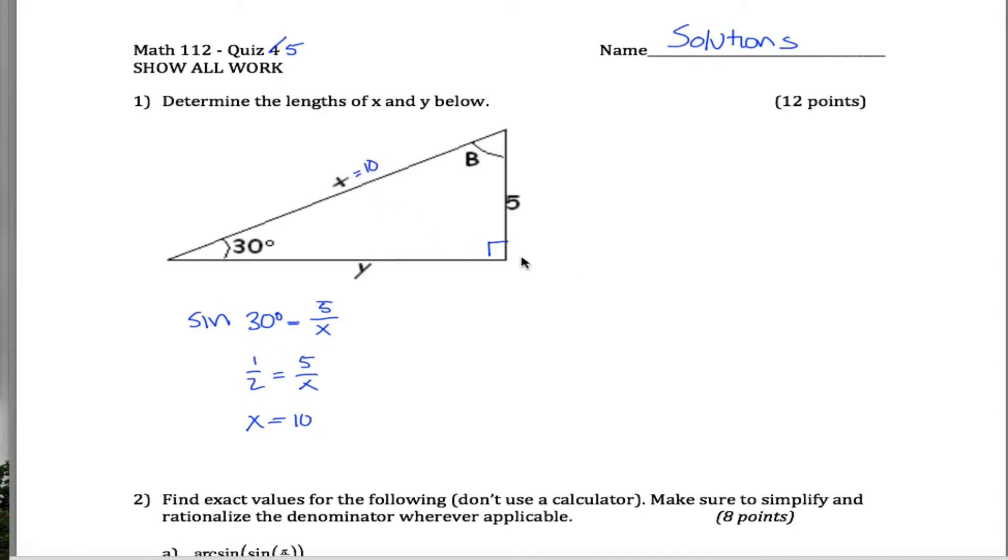To figure out y, you got a couple of options. Option one, you can use the Pythagorean theorem. That tells you that any time you have a right triangle, the sum of the squares of the lengths of the legs of that triangle is equal to the square of the hypotenuse. More succinctly, a squared plus b squared equals c squared.